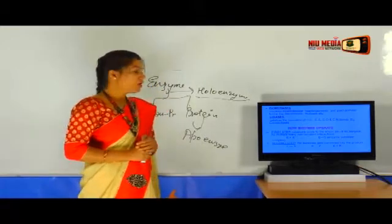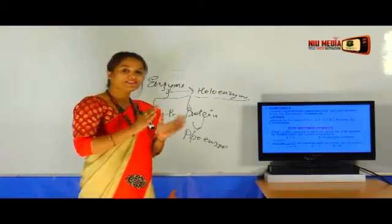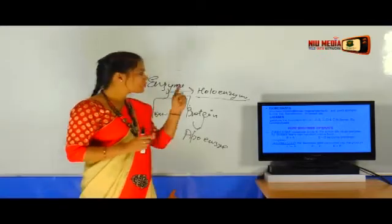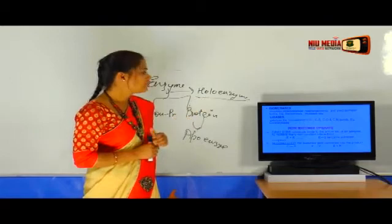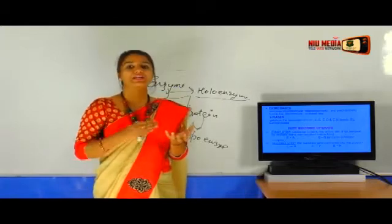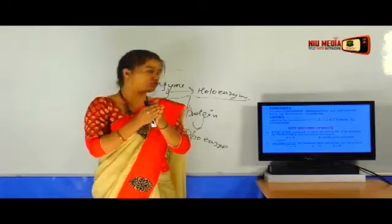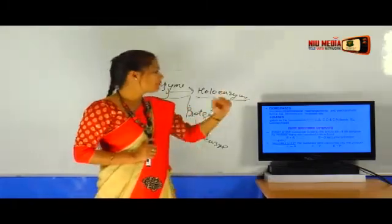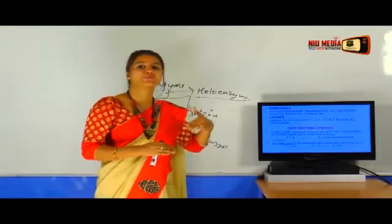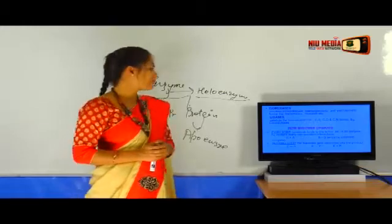We have isomerases, which involves the intramolecular rearrangement and yield isomeric forms. In this, isomerization takes place. Example: mutases, racemases. Then we have ligases. Ligases is a very common enzyme for DNA also, for DNA ligation. It plays a role in ligation and attaching two molecules, like carbon-carbon, carbon-sulfur, carbon-oxygen and carbon-nitrogen bonds. Example: carboxylases.